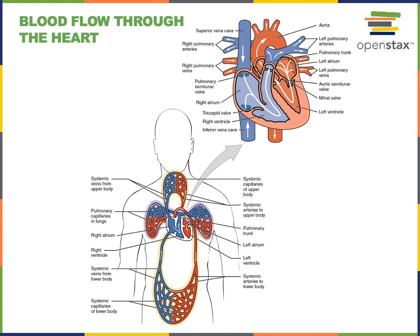The pulmonary arteries then carry this deoxygenated blood into the capillaries of the pulmonary circuit. The capillaries are the small blood vessels where gas exchange occurs. Oxygen diffuses into the blood at the pulmonary capillaries. Then the blood from the pulmonary capillaries, that is now oxygen-rich, drains through pulmonary veins back to the heart at the left atrium.